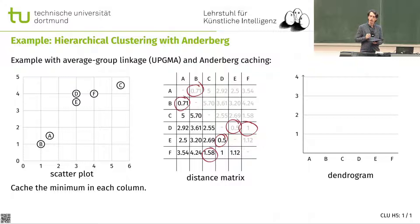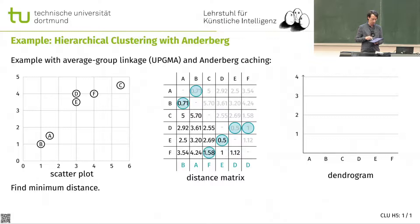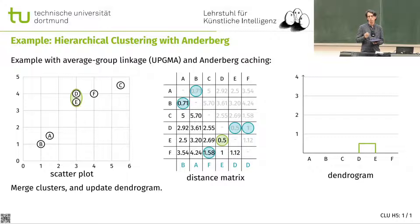Now if I want to find the minimum, I only have to scan these cached values to find 0.5, because it must be one of my marked values. So I have my cache — I've been writing down the letter of the minimum here — and I can identify the minimum and merge D and E just as before.